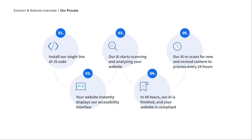Then your website instantly displays our accessibility interface, and simultaneously the AI kicks in, and within 48 hours it's finished. Your website is fully accessible, compliant, and you'll receive the accessibility statement to your email.